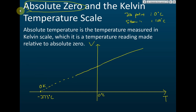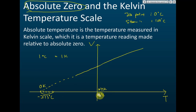We still use the same interval scale — one degree Celsius is equivalent to one kelvin. So if the temperature increases by five degrees Celsius, it also increases by five kelvin. Counting from zero kelvin up to zero degrees Celsius, you find that is 273 kelvin. So zero degrees Celsius equals 273 kelvin on the Kelvin temperature scale.